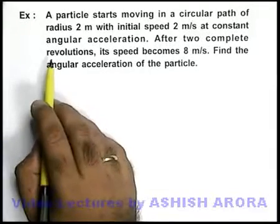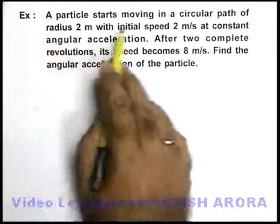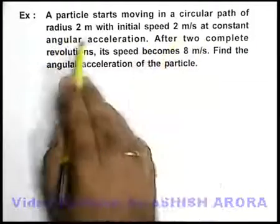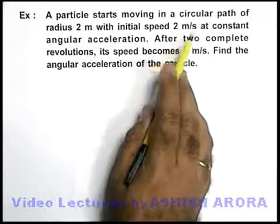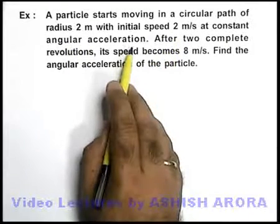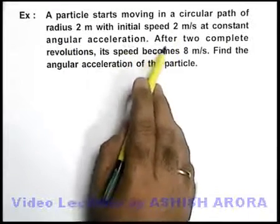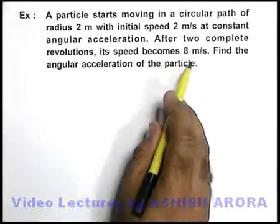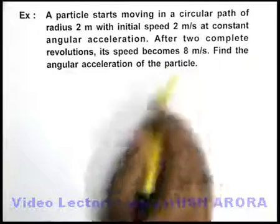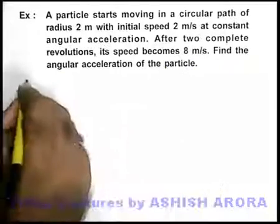In this example, we are given that a particle starts moving in a circular path of radius 2 meters with initial speed 2 meters per second at constant angular acceleration. After 2 complete revolutions, its speed becomes 8 meters per second. We are required to find the angular acceleration of the particle.